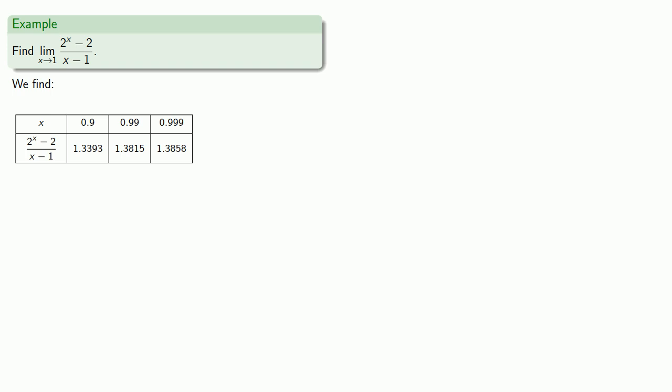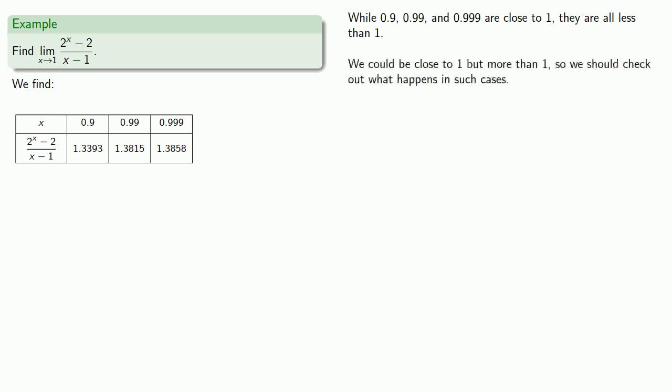And three pieces of evidence is good. However, they do share a common feature: 0.9, 0.99, and 0.999, while they're all close to 1, they're all less than 1. And so the risk we run is that because all of these values share the same characteristic, namely that they're less than 1, it's possible that something may happen for them that doesn't happen for everything else. To understand this, we may have to look around. And in this particular case, we could be close to 1 but more than 1. So we should check out what happens in such cases.